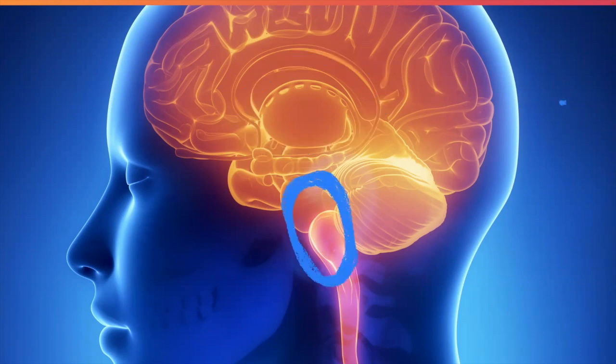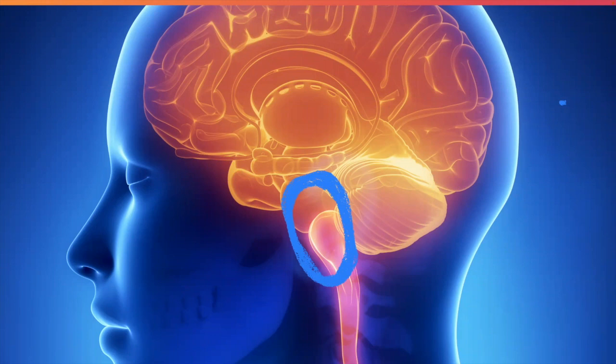Finally, the brain stem includes the midbrain, the pons, and the medulla oblongata. Circulation, breathing, heartbeat, and sleep are regulated here.